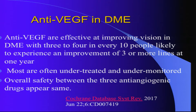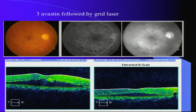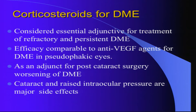The safety profile among all three anti-VEGF agents — Avastin, Lucentis, and Eylea — is the same; that part is very clear. Here is a case where everything was wrong with the patient: 58 years old, underwent metabolic control and the thickening started going down; we then gave three Avastin injections and performed grid laser — you can see how well he responded. Anti-VEGFs definitely have a role.